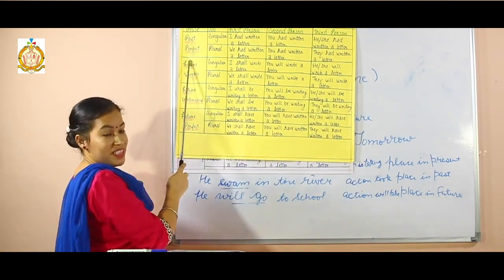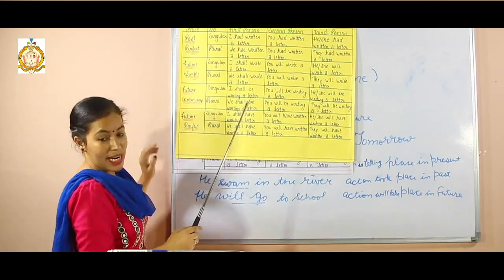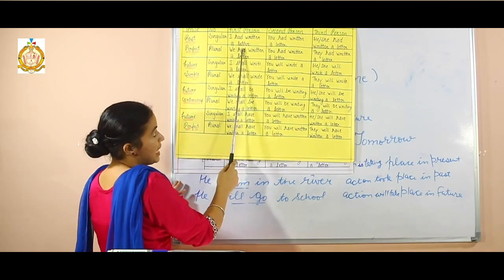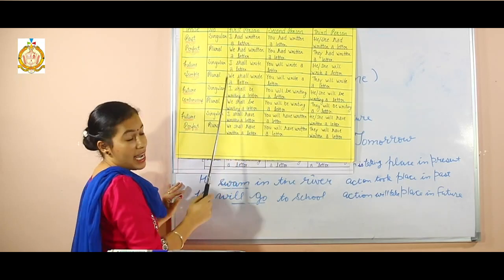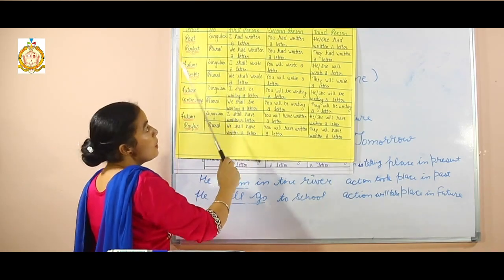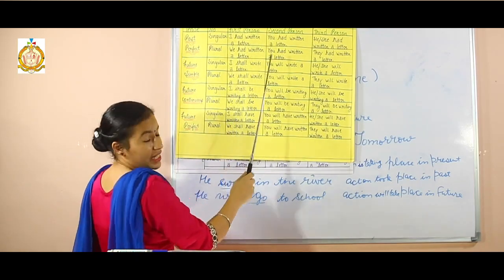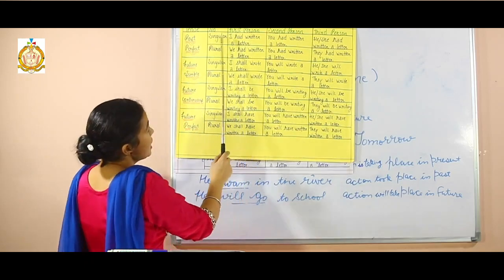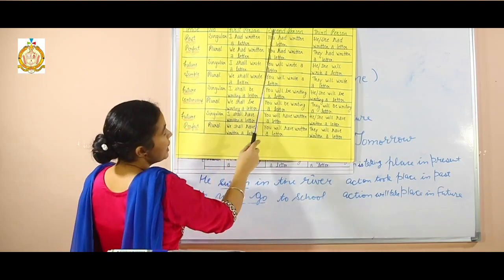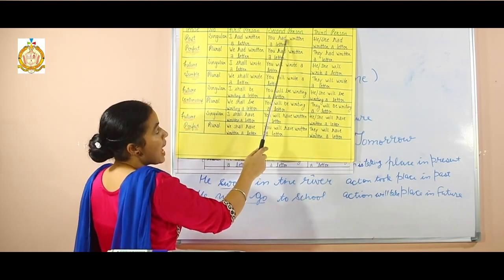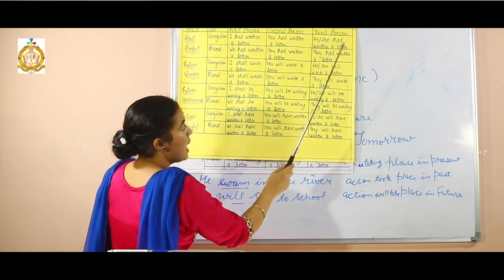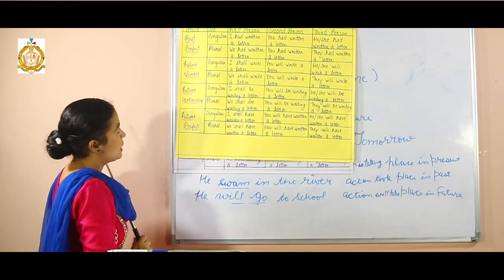Now, in past perfect tense, we write 'I had written a letter.' We use 'had' in past perfect tense for all persons — first person: 'I had written a letter', second person: 'You had written a letter', third person: 'She or he had written a letter.'